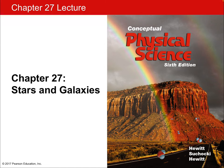Hello, and welcome to the lecture for Chapter 27 of Conceptual Physical Science, 6th edition. In this second chapter on astronomy, the second of three, we're going to talk about stars and galaxies. We have zoomed out from talking about our solar system to talking about other solar systems indirectly, and stars other than our sun.